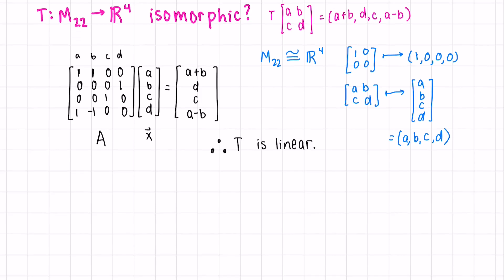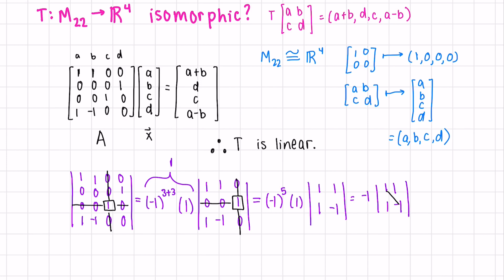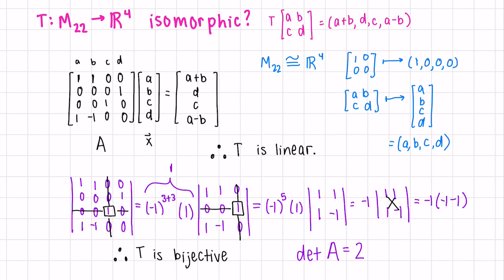Since we can represent this transformation by a matrix, we say that it is linear. Next, let's find the determinant of this matrix to check if our matrix is invertible. To find the determinant, let's expand along the third row. We should write negative 1 to the exponent row 3, column 3, so 3 plus 3, which is even. So we'll just end up with positive 1. Then times 1. Next, we can expand along the second row. We have negative 1 to the exponent row 2, column 3, which is 5. And now we do 1 times negative 1 minus 1 times 1. The determinant of our matrix A is negative 2, which is not 0. Therefore, we can confirm that our transformation is bijective, which means that our transformation is isomorphic.